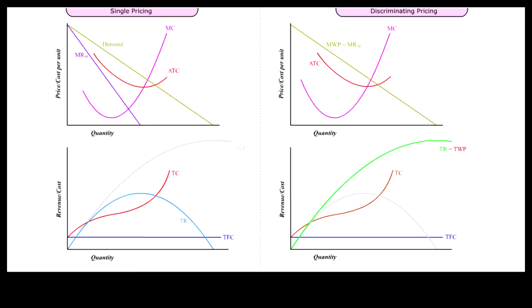The U-shaped ATC and MC curves are typical of firms under diminishing returns, where the optimal capacity of the fixed input is soon reached, leading to high variable costs.